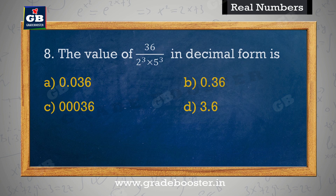The value of 36 / (2³ × 5³) in decimal form is. Decimal ke rup mein 36 / (2³ × 5³) ka maan hai. A. 0.036, B. 0.36, C. 0.0036, D. 3.6.